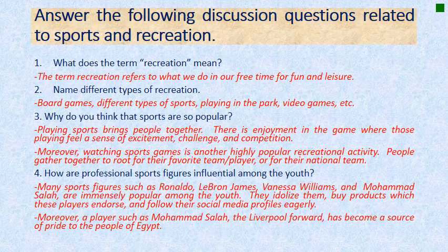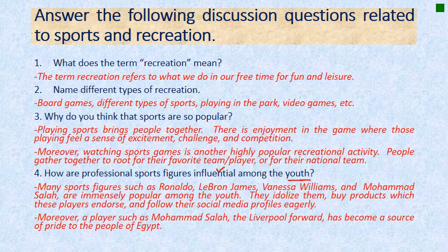Question number four: how are professional sports figures influential among the youth? Many sports figures such as Ronaldo, LeBron James, Vanessa Williams, and Mohamed Salah are immensely popular among the youth. The youth idolize them — they look at them as idols, buy the products they endorse, and follow every bit of their life on social media. They're role models. Moreover, a player such as Mohamed Salah, the Liverpool forward, has become a source of pride to the people of Egypt.